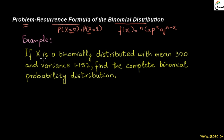Here we have an example: if x is binomially distributed with mean 3.20 and variance 1.152, find the complete binomial probability distribution.